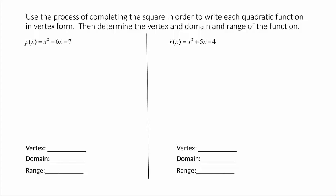In this case, we're not trying to solve anything. We're trying to take a quadratic that's written in standard form and convert it to vertex form. In this first example, we have p(x) equal to x squared minus 6x minus 7.